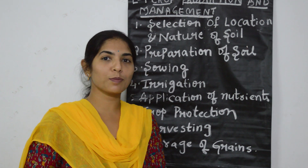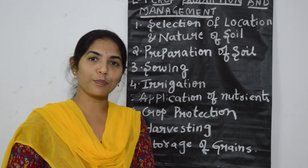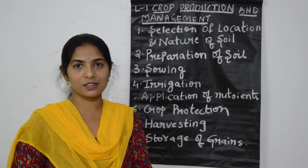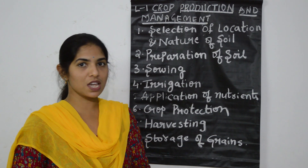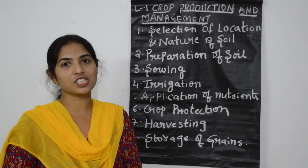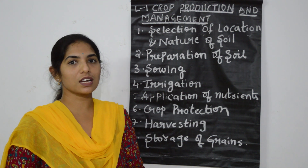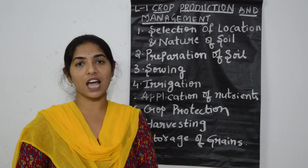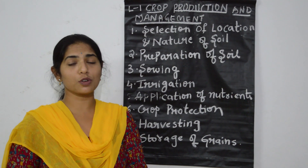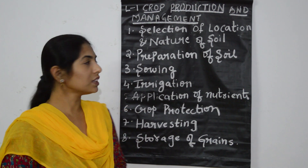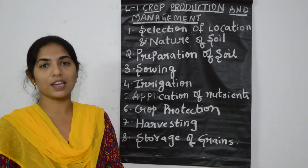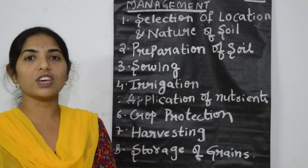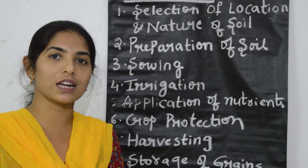We have already learnt about crop, crop produce and various types of crops that are grown in India. So now we will see about basic agricultural practices that are performed by a farmer. It is nothing but the various steps performed by a farmer to produce a good crop. We call it as basic agricultural practice.